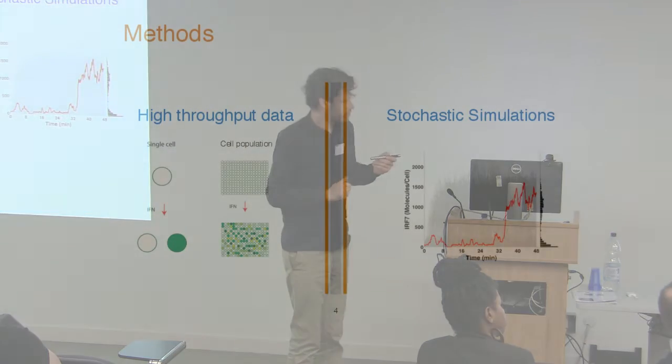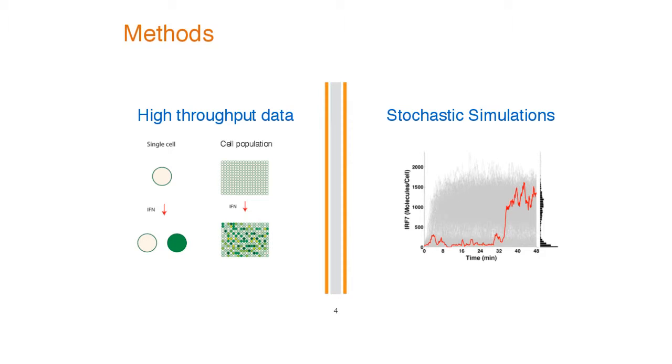The corresponding simulations that would allow us to mimic this behavior would be a stochastic simulation where a single run will basically show a switching after a certain time. Whether this switching from the low state of IRF7 response to the high state occurs and after how long is a random process governed by the stochastic processes in the model. The gray things in the background is what happens if you repeat that many hundreds of thousands of times in simulation. Every simulation will give you a different time point where the switching occurs or not.